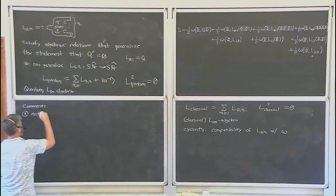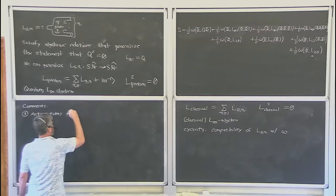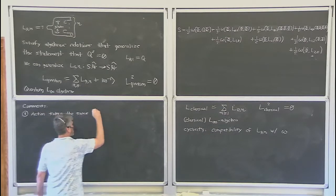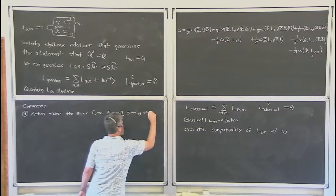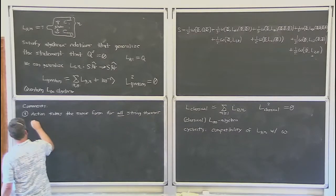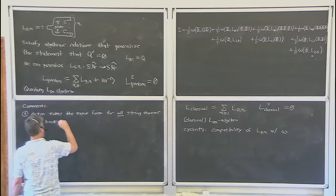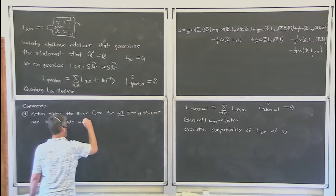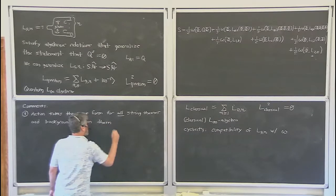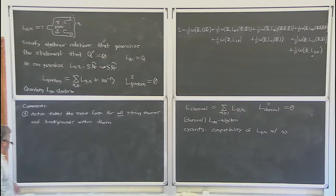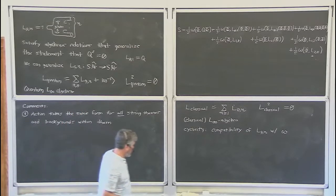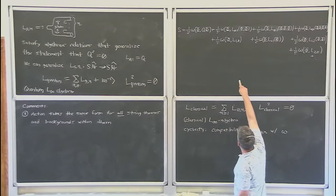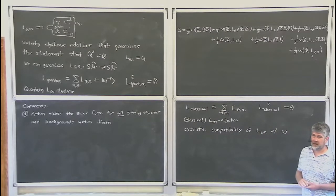Comment one: this action takes the same general form for all string theories and backgrounds within those string theories. The differences between different string theories and different backgrounds are basically your choice of vector space and some technical details in how the symplectic form and products are explicitly realized. But the algebraic structure I've described is basically universal.